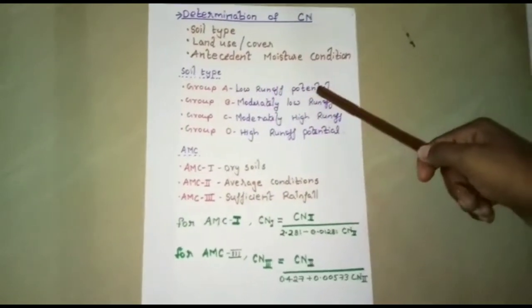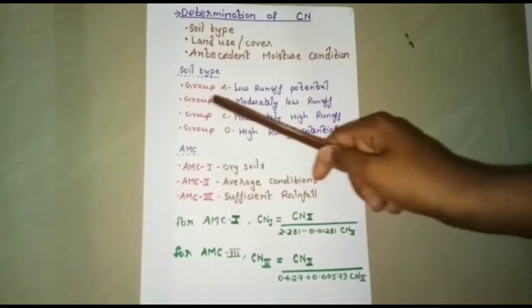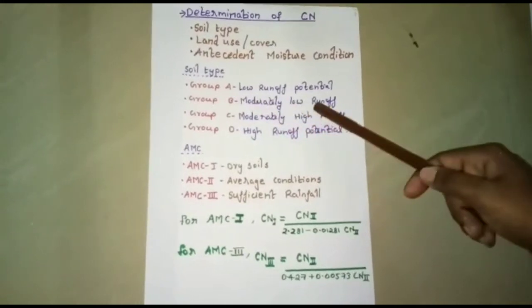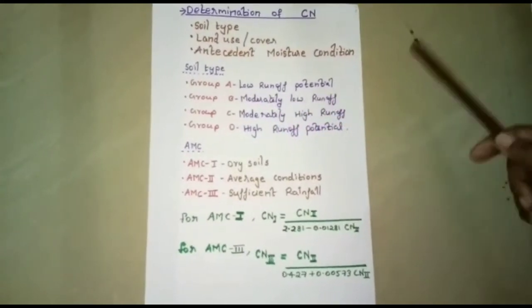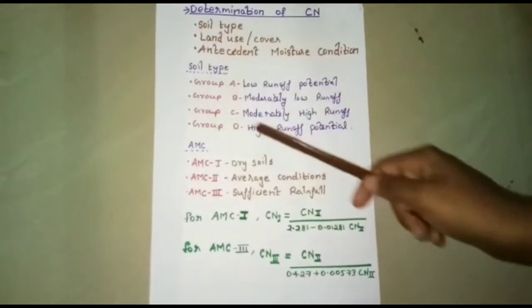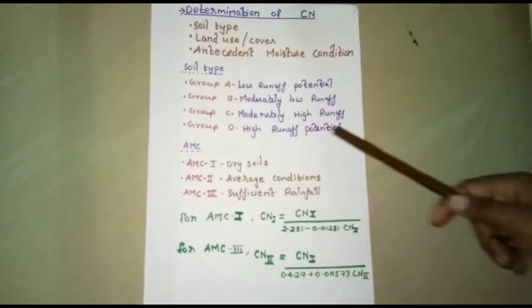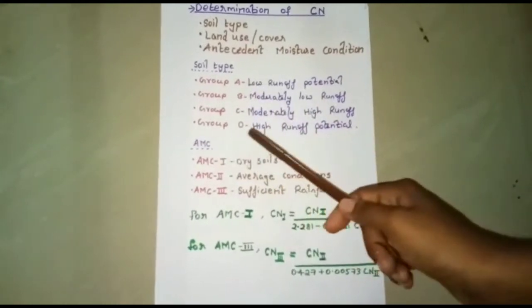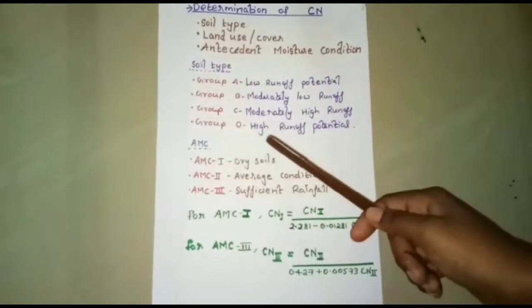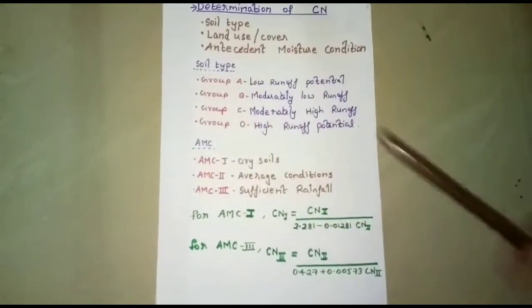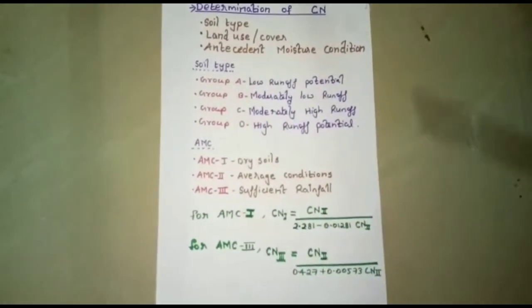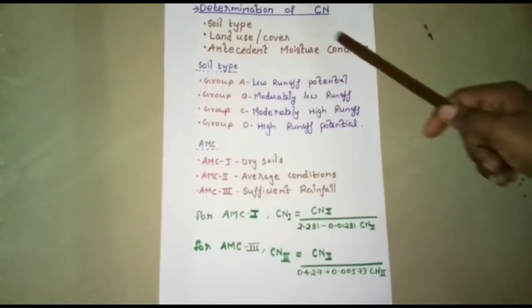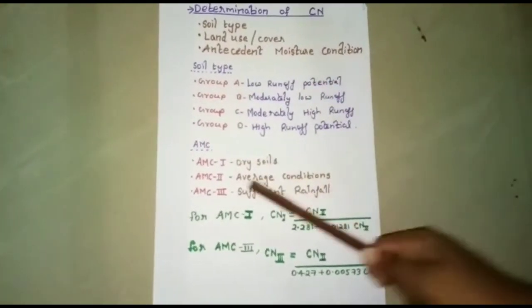First is soil type. Group A soil is for low runoff potential. Group B is for moderately low runoff. Group C soil is for moderately high runoff, and Group D is for high runoff potential.